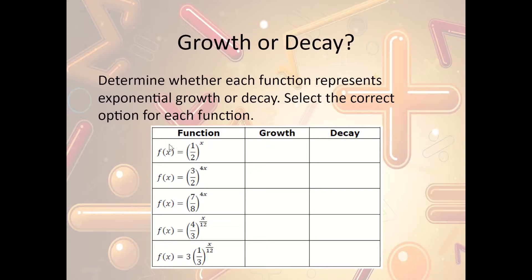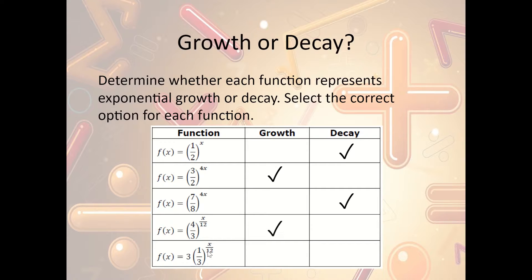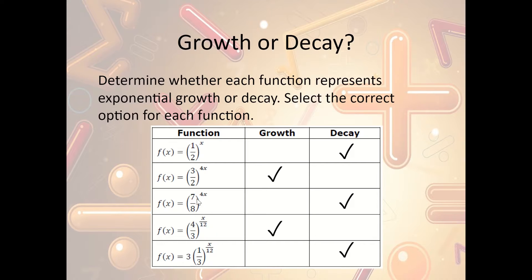Let's look at examples. f(x) = (one-half)ˣ — one-half is less than 1, so that is decay. Three-halves to the x — that's bigger than 1 (it's 1 and a half), so that's growth. Seven-eighths to the x — smaller than 1, so that's decay. Four-thirds to the x — bigger than 1, so that's growth. One-third to the x — less than 1, so that is decay. Notice: it doesn't matter what coefficient is there or how the exponents are arranged — the only number that matters is the base. If it's bigger than 1, it's growth; if it's smaller than 1, it's decay.